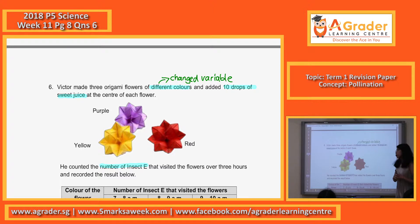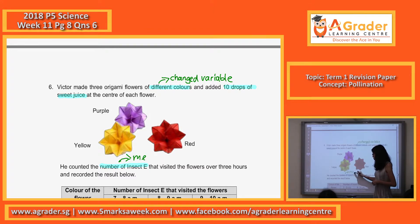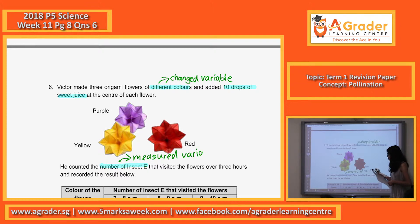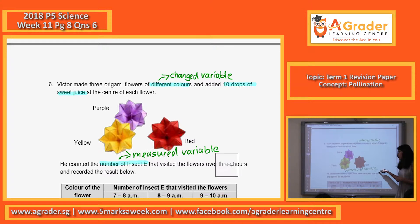Alright, so now, what is your measured variable, Jason? What is your measured variable? The insects — they counted the insects, so it's your measured variable. Alright, please learn how to identify your change and measured variable in all the experiment questions. Please learn how to identify it.